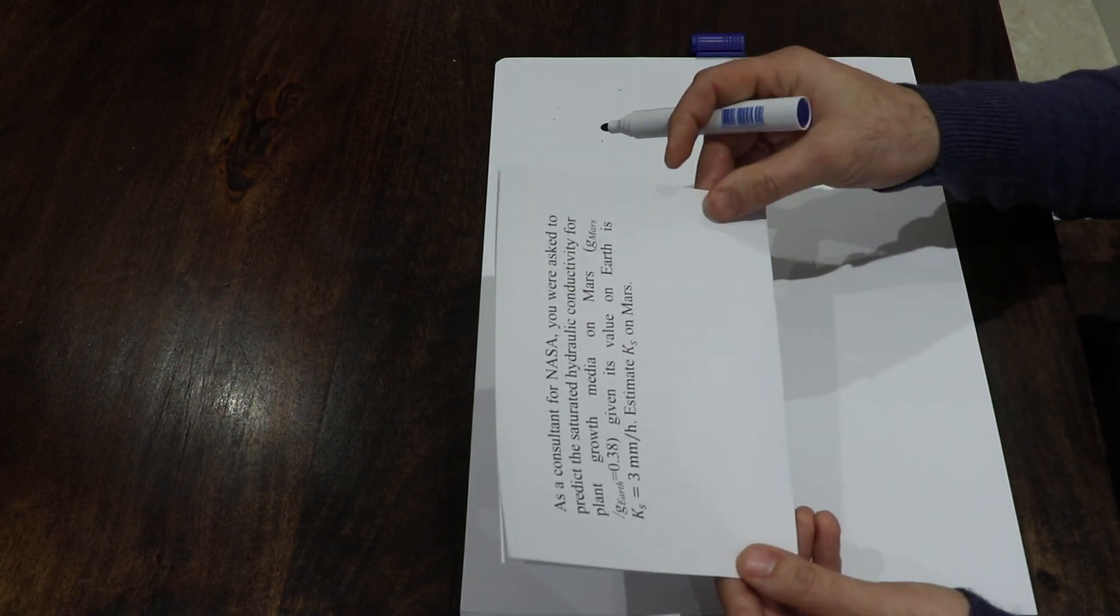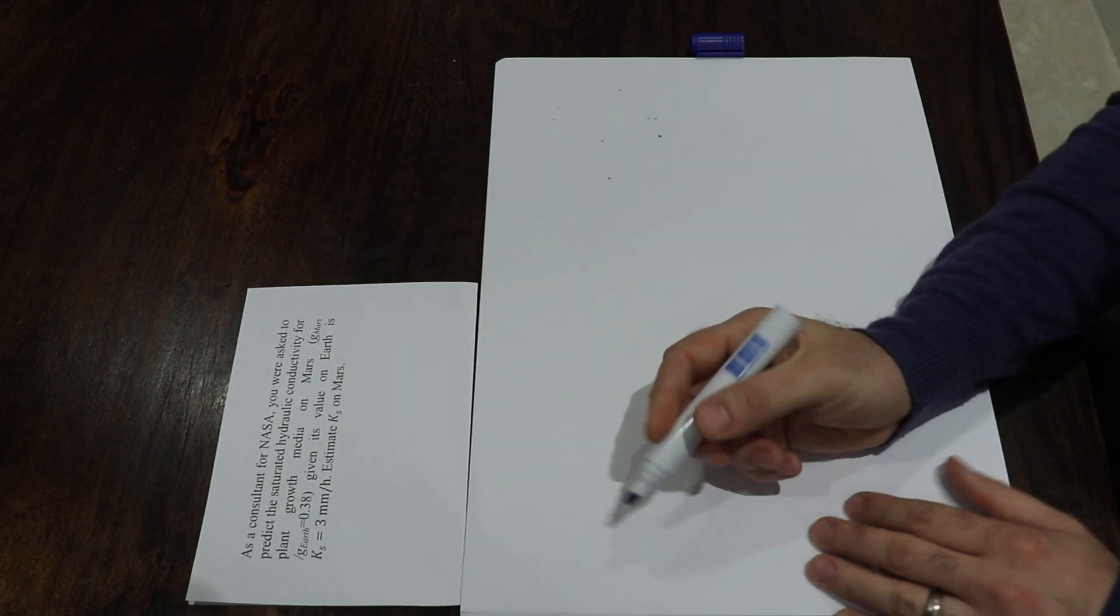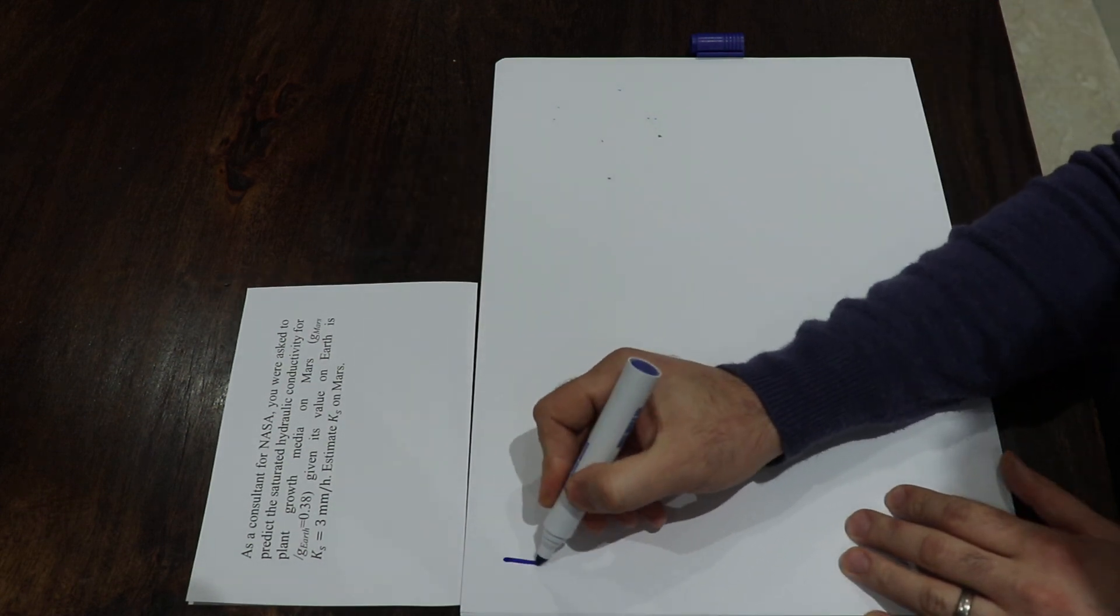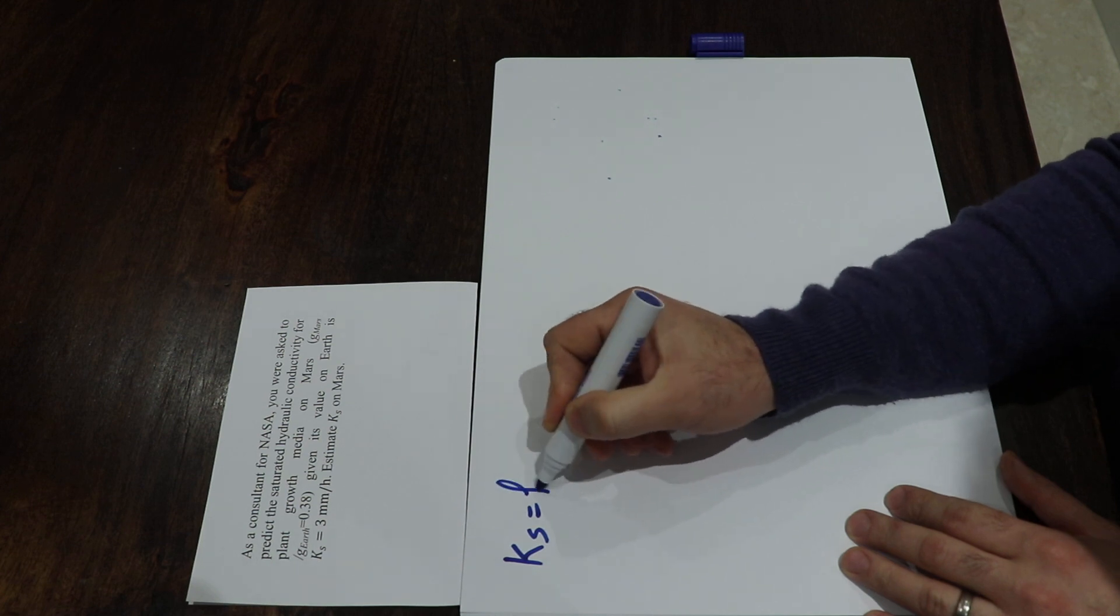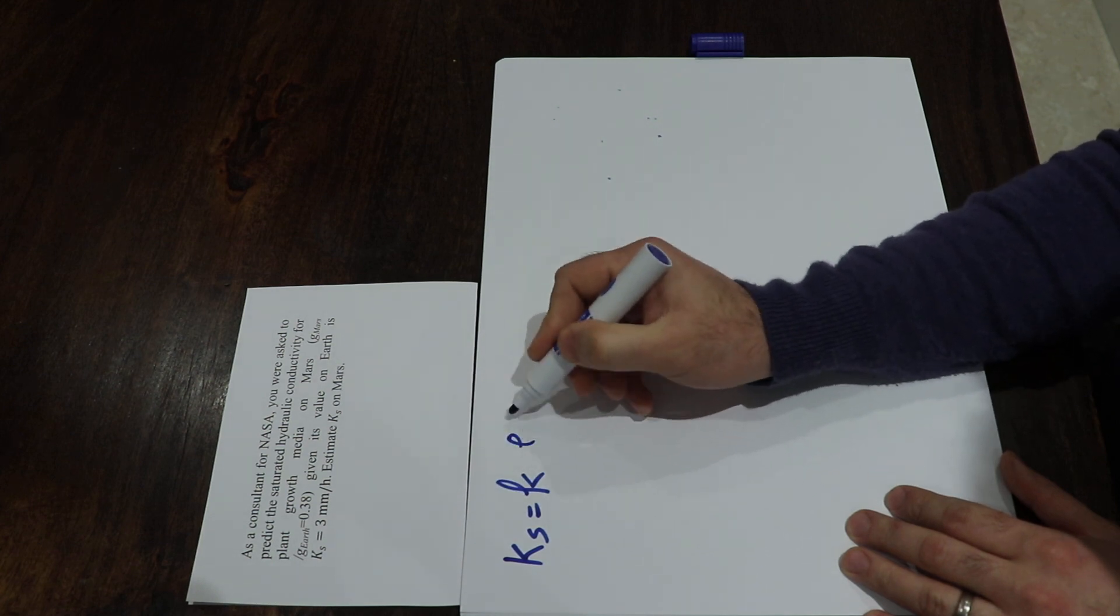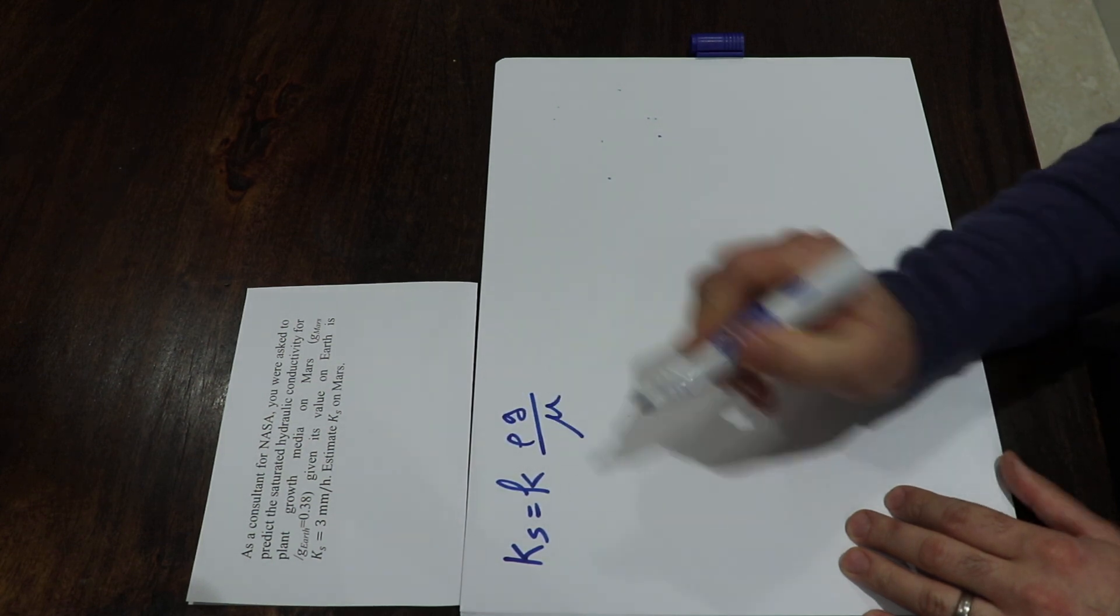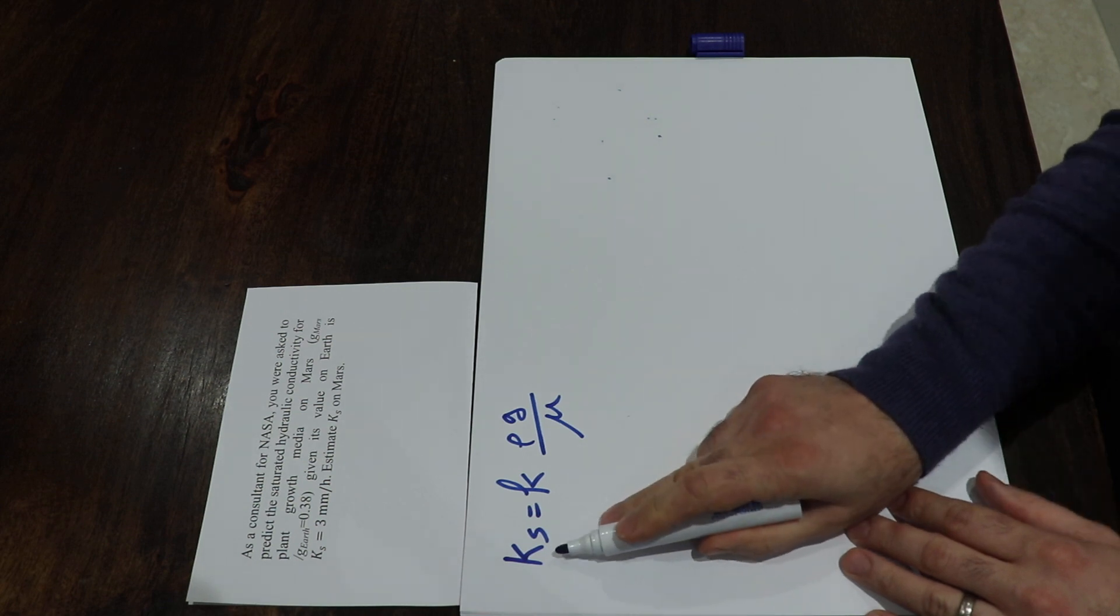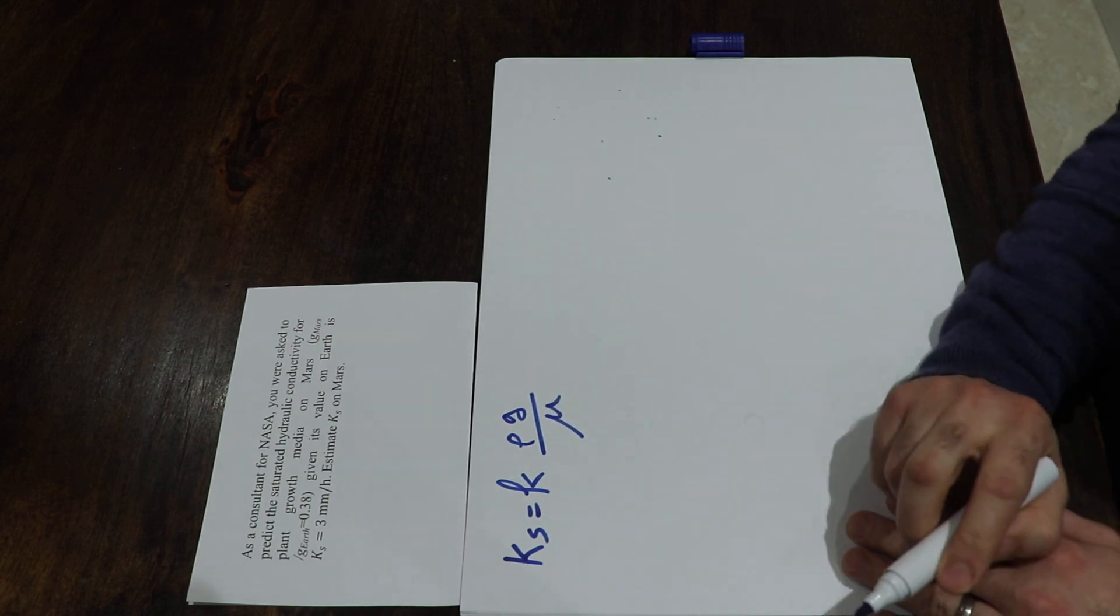Okay, to solve this question you have to remember that the saturated hydraulic conductivity is equal to permeability times rho G divided by mu. As you can see, the Ks is proportional to the G value.